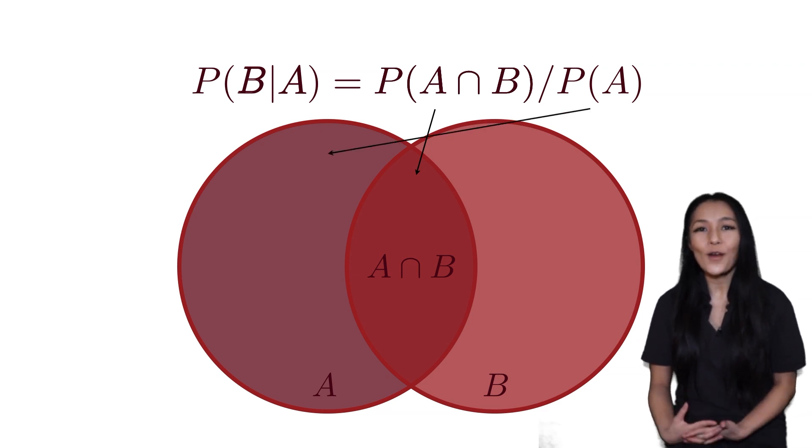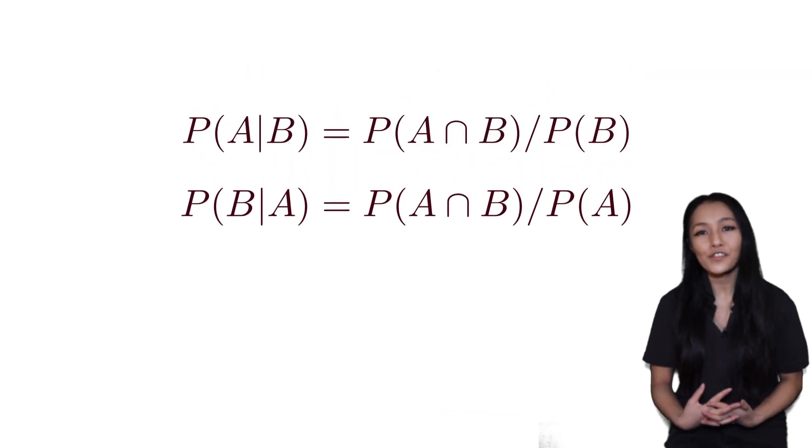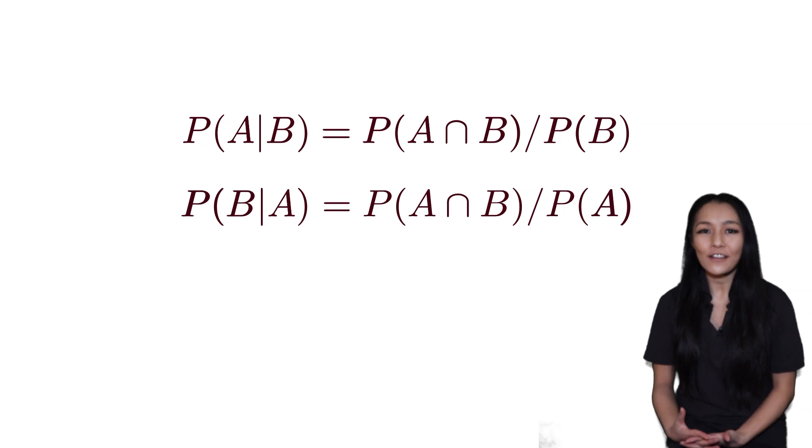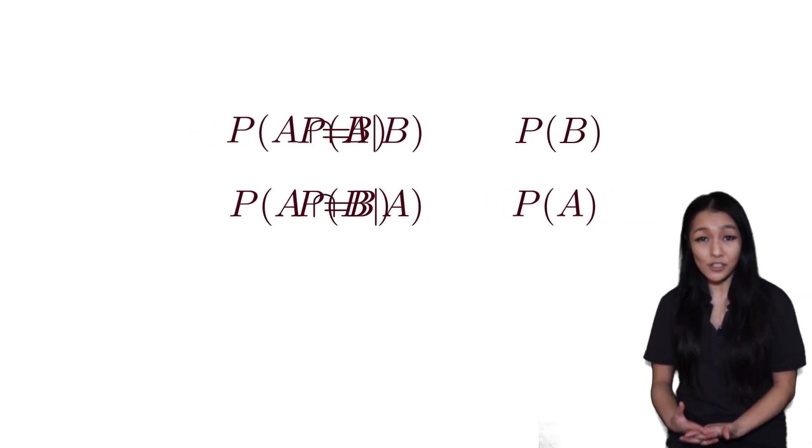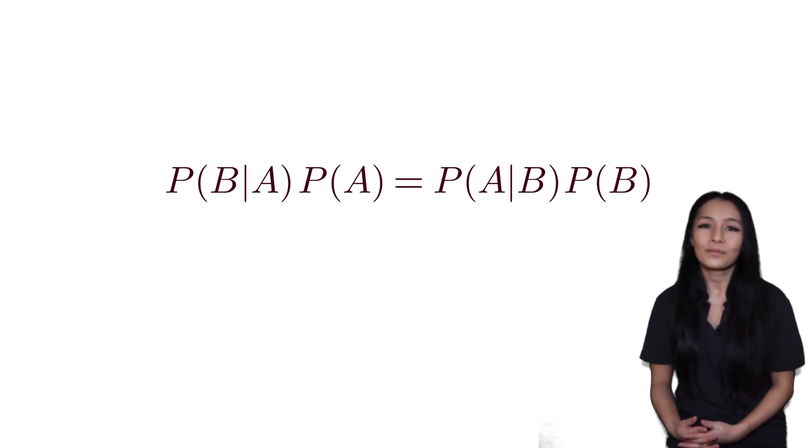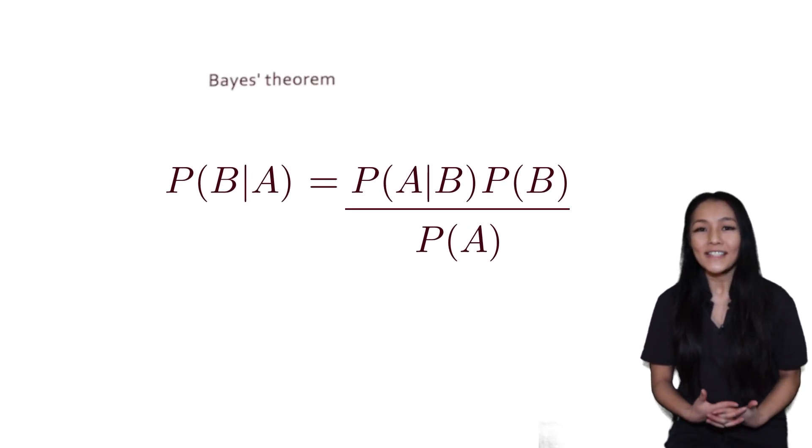In these equations, you can see they both share the joint probability of A and B. Rearranging for this and then using substitution, we then arrive at Bayes' theorem.